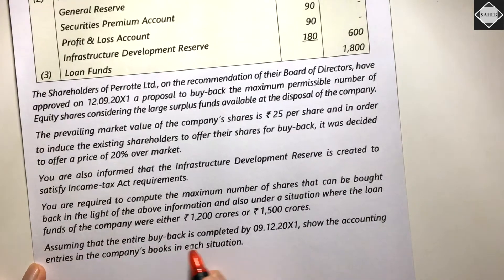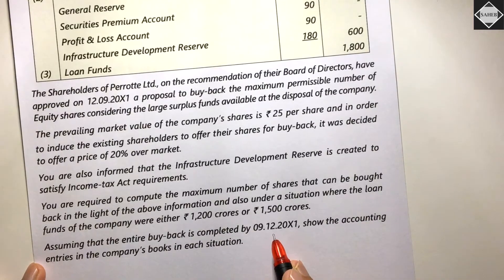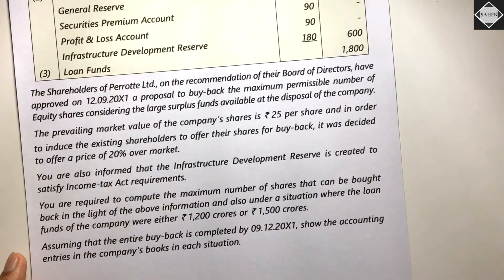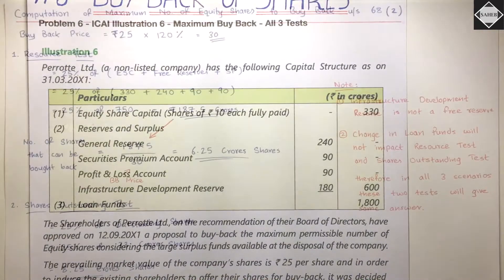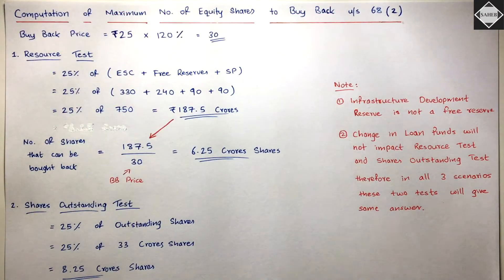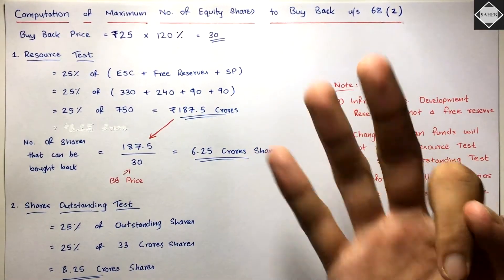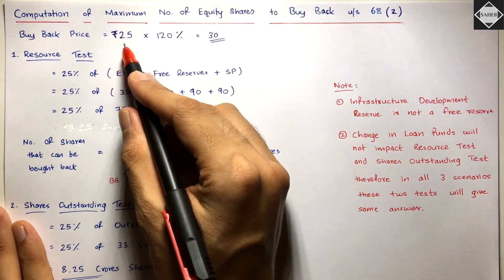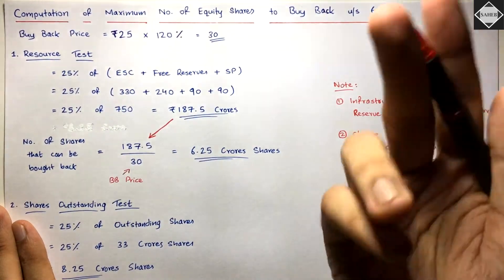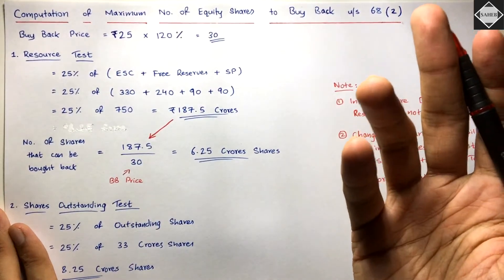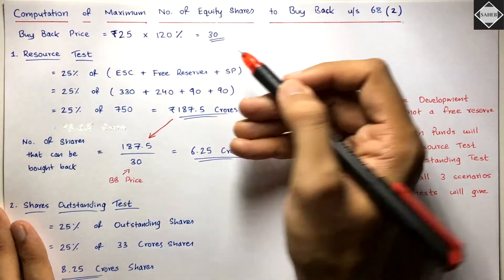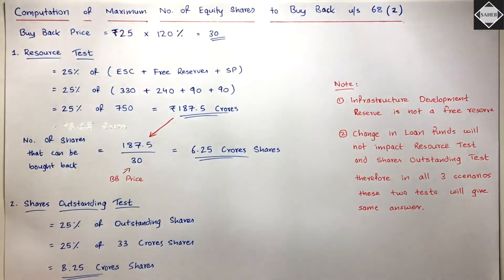Assuming the entire buyback is completed by 9th December 2021, we also need to show the accounting entries in the company's books in each situation. Let's go to the solution. First, we do all three tests: Resource Test, Shares Outstanding Test, and Debt-Equity Ratio Test. For the buyback price: market price Rs. 25 multiplied by 120% equals Rs. 30.